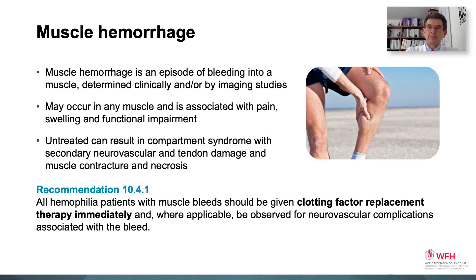In other musculoskeletal circumstances, muscle hemorrhages are not taken with great concern. But in patients with coagulopathies, this requires all of our attention. A muscle hemorrhage is defined as an episode of bleeding into a muscle, determined clinically by physical exam or by imaging studies. It may occur in any muscle and is usually associated with pain, swelling, and great functional impairment. If untreated, they can result in compartmental syndromes with secondary neurovascular and tendon contractures, damage to the muscle, and sometimes muscular necrosis and retractions.